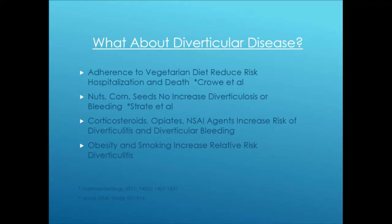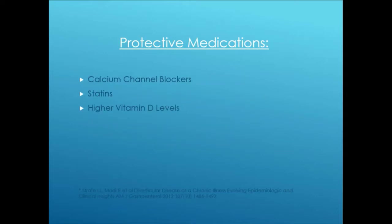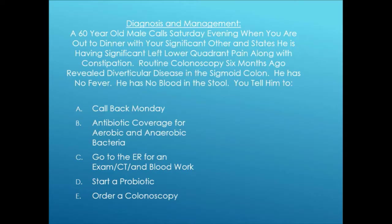Adherence to a vegetarian diet reduces risk of hospitalization and death from diverticular disease. Nuts, corn, and seeds have no increased risk of diverticulosis or bleeding. Key takeaway: corticosteroids, opiates, and NSAIDs all increase risk. Obesity and smoking increase relative risk of diverticulitis. Some evidence suggests calcium channel blockers, statins, and high vitamin D levels may be protective.